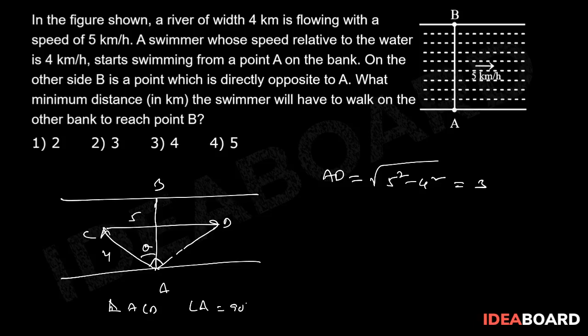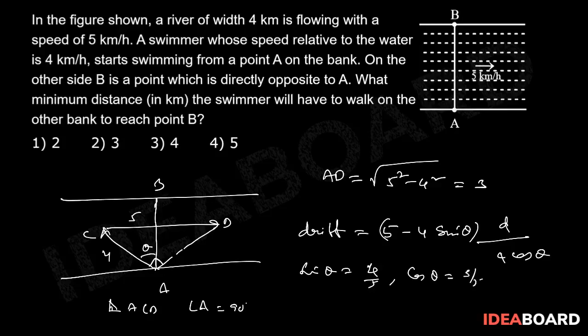Therefore, drift equal to 5 minus 4 sin theta into D by 4 cos theta. Now, sin theta equal to 4 by 5, cos theta equal to 3 by 5.